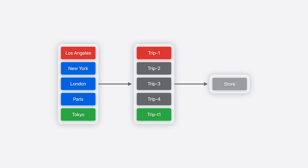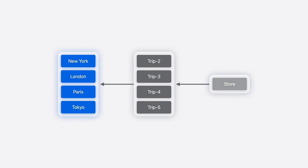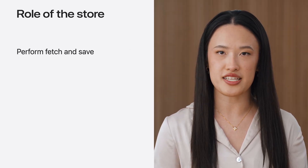When the model context saves, it tells the store to delete the Los Angeles trip and insert the new Tokyo trip. The store will then assign the Tokyo model a permanent persistent identifier — trip5 — and map it to its former temporary identifier, tripT1, in a process known as remapping. The store then responds to the model context with the updated persistent identifier for the Tokyo trip. After the model context finishes updating its state, the UI can update the view rendering the trips. Persisting changes is just one example of how the model context works.